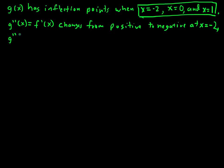g double prime of x equal to f prime of x changes from negative to positive at x equals 0.